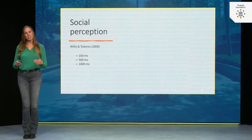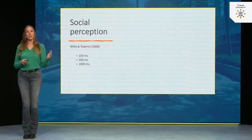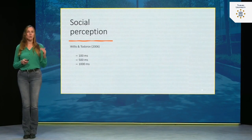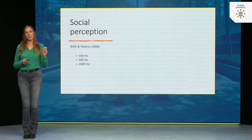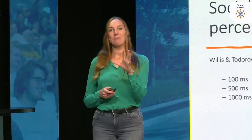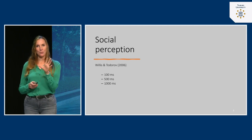In this research, social psychologist Willis and Todorov wanted to know how quickly people form impressions of others. They invited participants to the lab, placed them behind a computer screen, and showed them pictures of random people they didn't know — very, very quickly. Either 100 milliseconds (one tenth of a second), half a second, or 1000 milliseconds (one full second). I will now do this little experiment with you — I'll show you a picture on screen very quickly, so please pay attention.